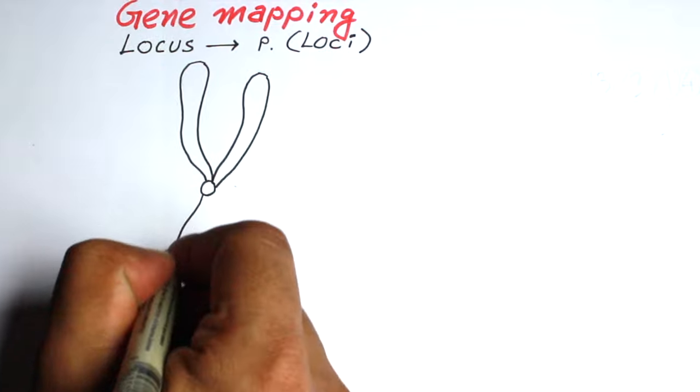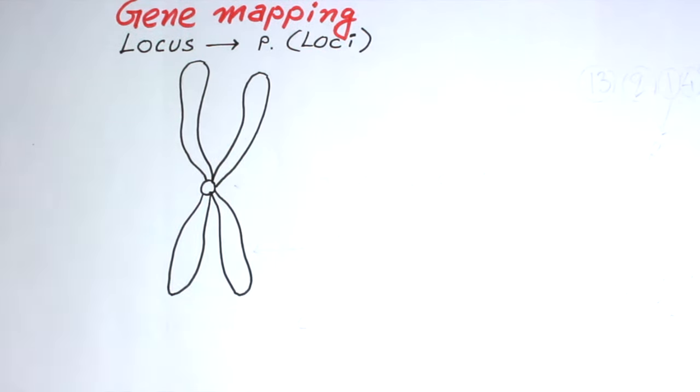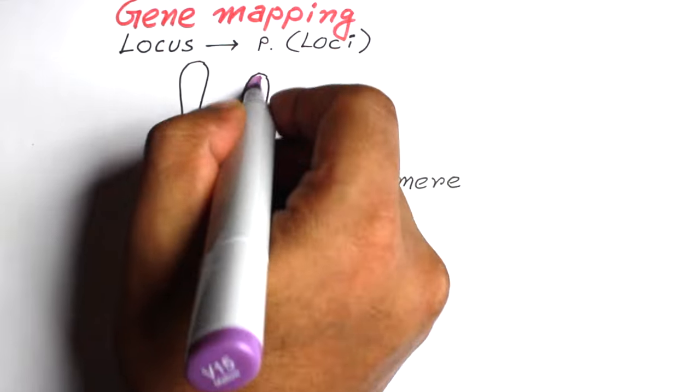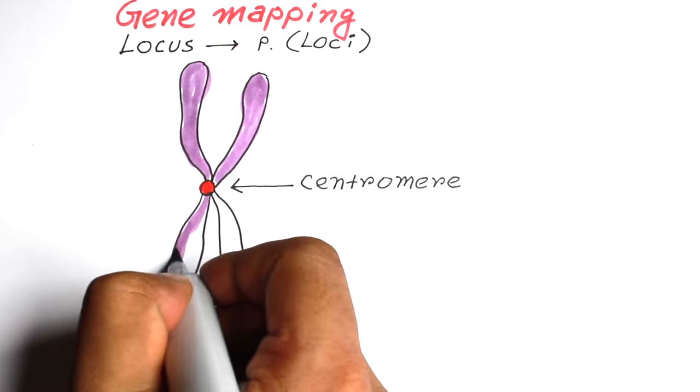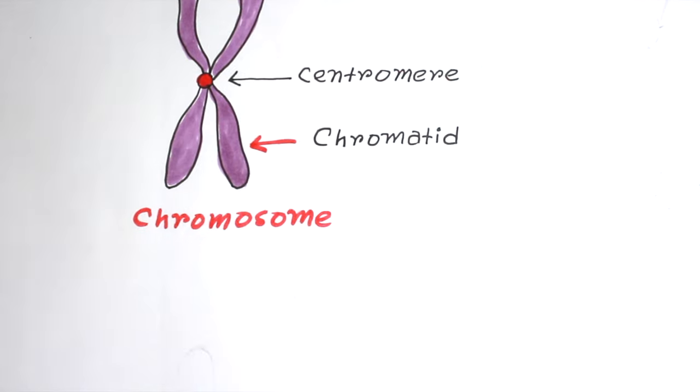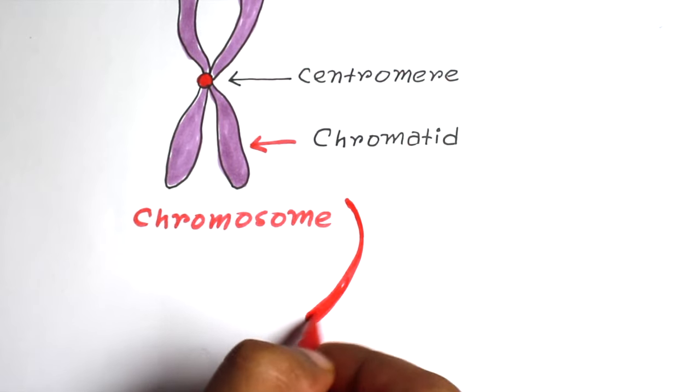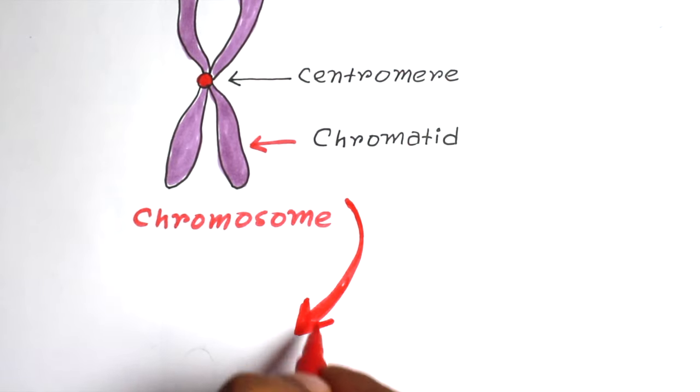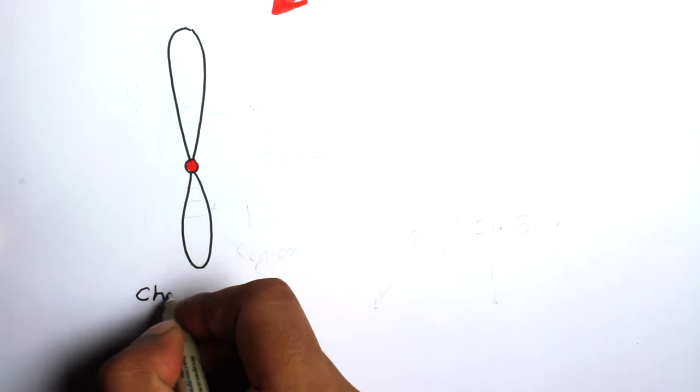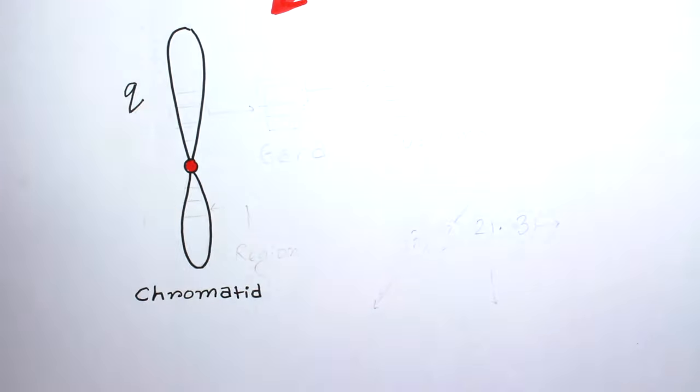Let's draw a chromosome. Here is the centromere, the point where two sister chromatids attach together. As you know, the functional unit of chromosome is chromatid. Let's separate one chromatid here. Chromatid has two arms: Q arm is also called long arm, and P arm is also called short arm.